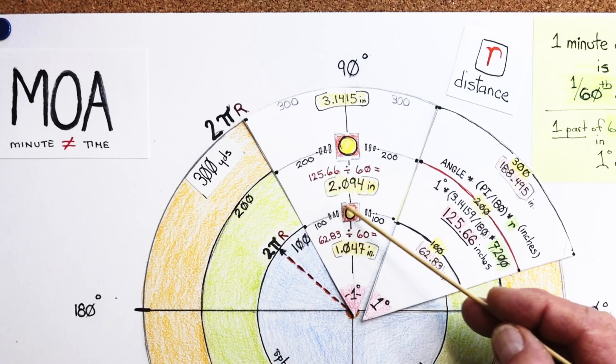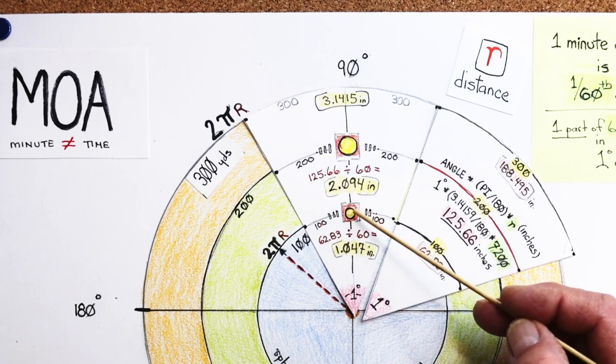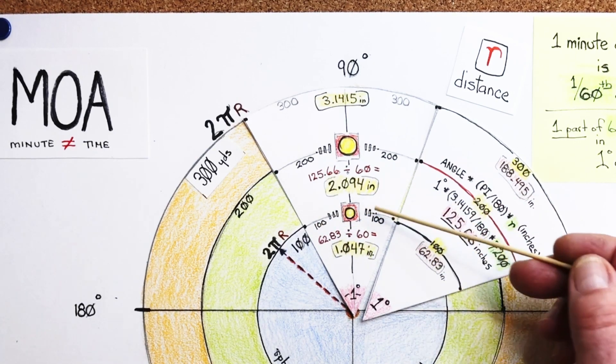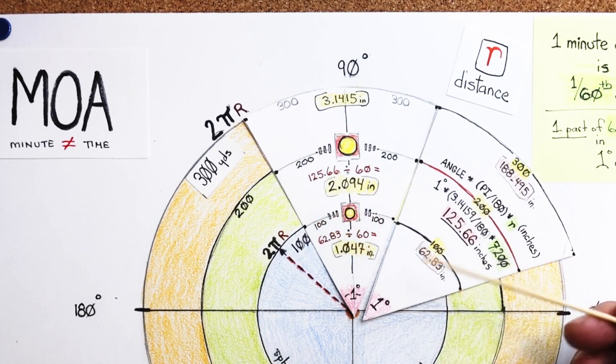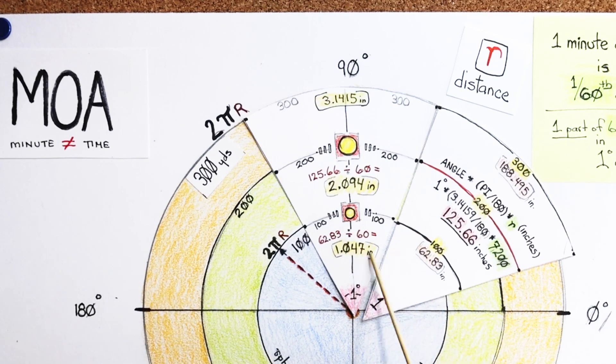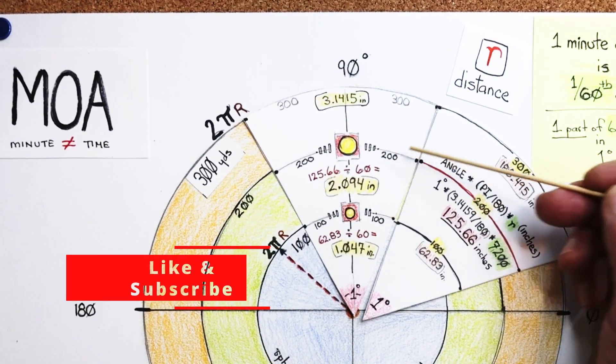There are 60 units along this line, and I only want to use one. So to figure out the size of each one of those units in 60 units, all I have to do is take 62.83 divided by 60, and I get 1.047 inches. If I go out to 200 yards.